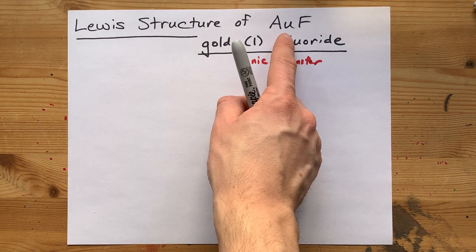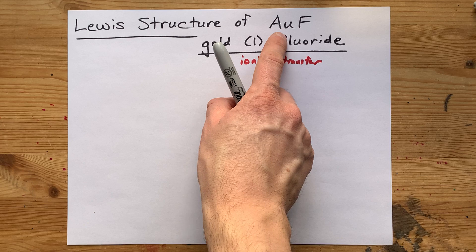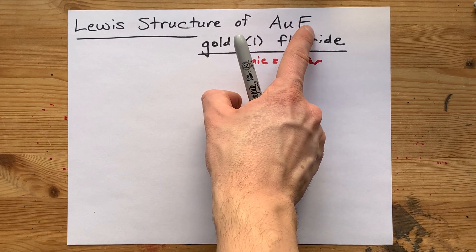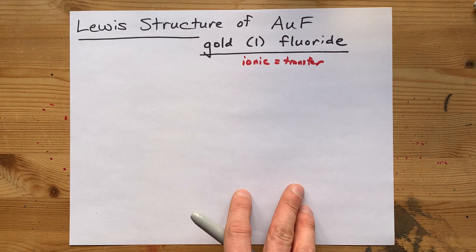And you can tell that the gold has a charge of one because they had to balance each other out. One gold balances with one fluorine, it says here.